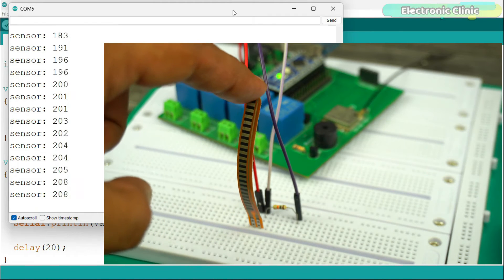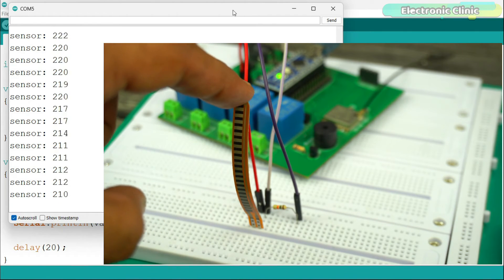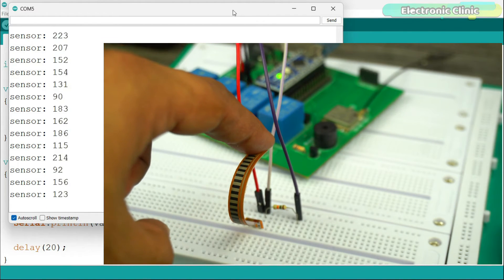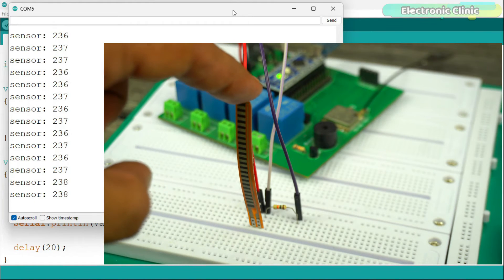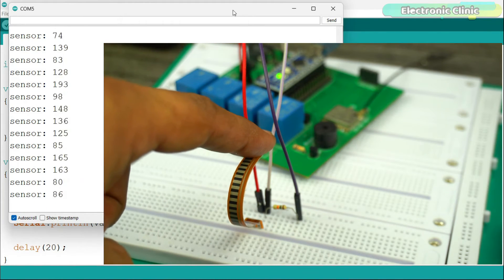Avoid sharp bends as it will completely damage the flex sensor, and then you won't be able to get the correct values. So as far as possible, smoothly bend the sensor. Now let's move on to the next example.